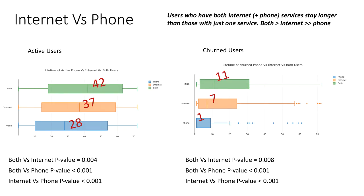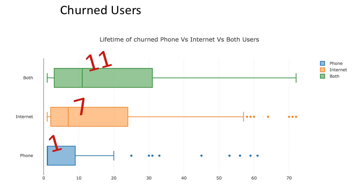Now we can make the comparison between three box plots. They denote the lifetime of users who had both internet and phone services, just internet services, or just phone services. We performed the pairwise Mann-Whitney U test and determined that all p-values are significant. Thus, we can say that users who take both internet and phone services stay longer with us than those who just take internet services, and these users in turn stay much longer than those who just take phone services. Interestingly, among our churned phone-only users, more than half of them stayed with us for only a month after activation.